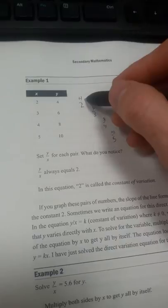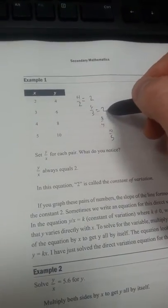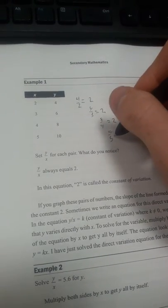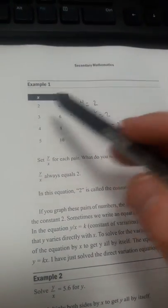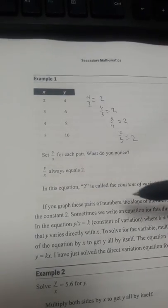What do you notice? If we look at the ratios here, they're all 2. 4 over 2 is 2, 6 over 3 is 2, 8 over 4 is equal to 2, 10 over 5 is equal to 2. So they have direct variation. The ratio of y over x is always the same for all these numbers. So y over x always equals 2.